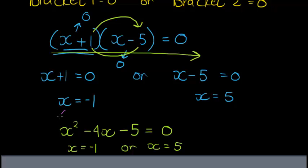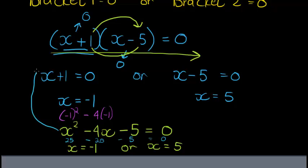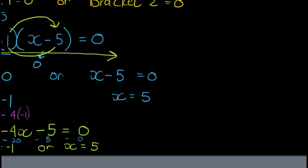Let's test that. If I substitute x with negative one: negative one squared is positive one, minus four times negative one is plus four, so one plus four equals five, and five minus five gives me zero — it works. If I substitute x with five: five squared is 25, minus four times five is 20, 25 minus 20 gives five, minus five gives zero. So I had to factorize to get from the expanded form into the two brackets.